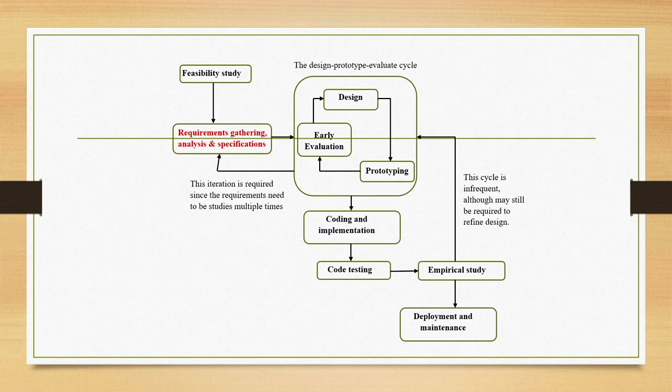The objective in the design and implementation of human computer interfaces is to design a usable system, and usable system design requires us to take users into account while designing the system. Due to the necessity of taking user input into account, lots of additional activities we have to do. To systematically represent the whole design and development process, we take recourse to what is called the software development life cycle, which is a stage-wise representation of the entire development process.